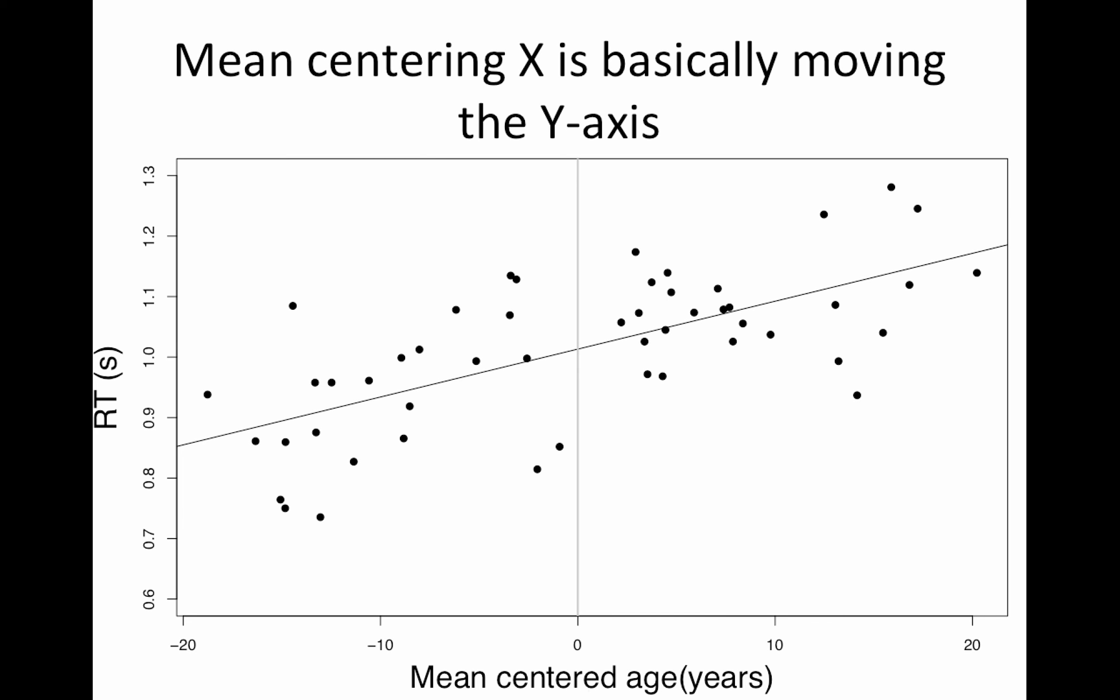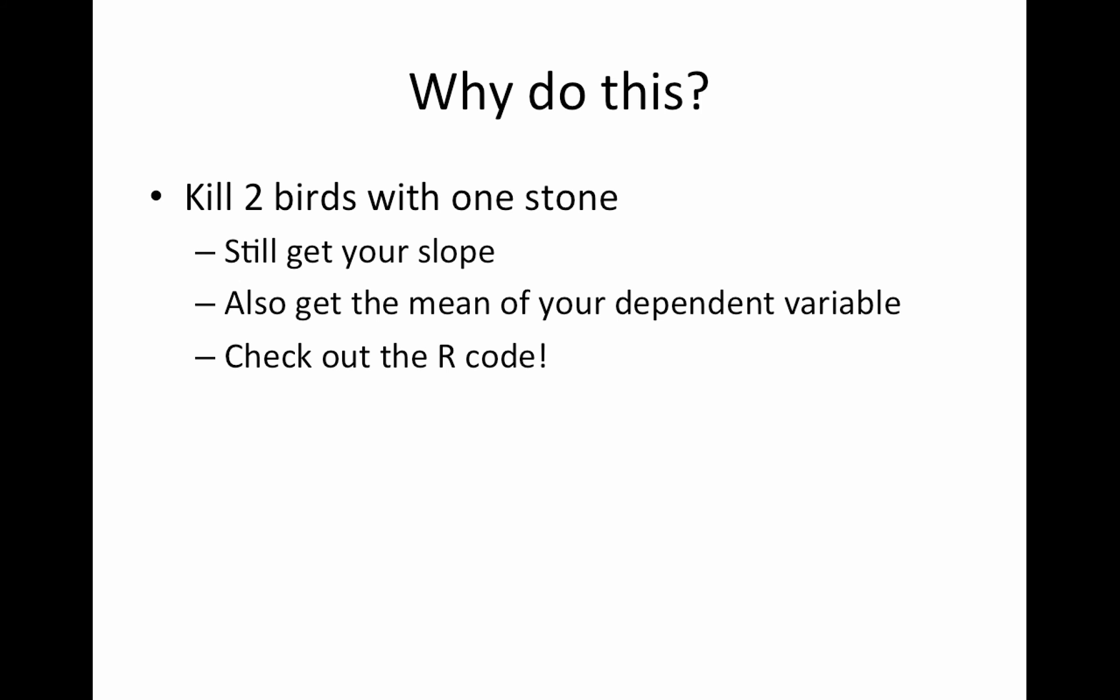Okay, so if you think about what the data are plotting and think about the equation just being a line, interpretation is pretty straightforward. So why do this? Because you can kill two birds with one stone. As we saw with the simple linear regression, the top model or the model we looked at last time, the intercept was meaningless, the reaction time for a zero-year-old. This way, your intercept has meaning and your slope has meaning. So that's great.